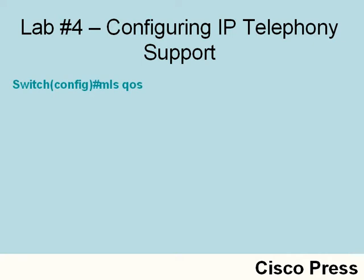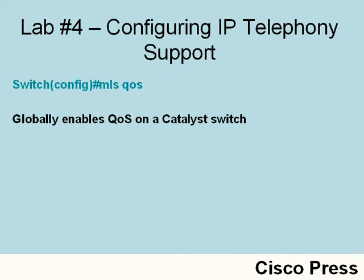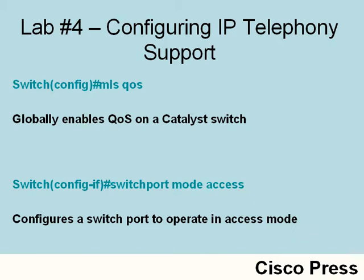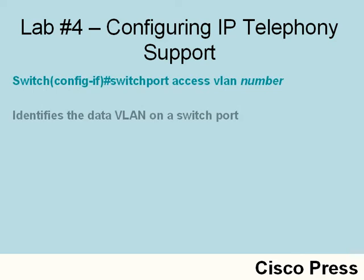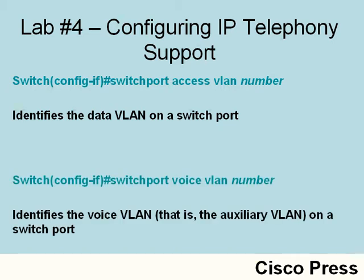First, we want to globally enable quality of service on the switch using the command MLS QOS — MLS for multi-layer switching. Even though we're sending traffic from two different VLANs, we configure the Catalyst switch port as an access mode port with the command switchport mode access. We specify the data VLAN with switchport access VLAN followed by the VLAN identifier, and the voice VLAN — sometimes called the auxiliary VLAN — with switchport voice VLAN followed by the VLAN identifier.